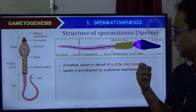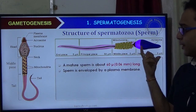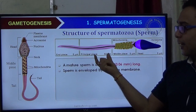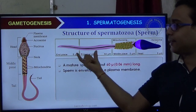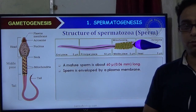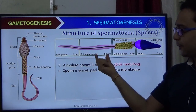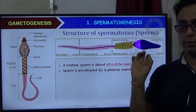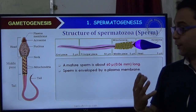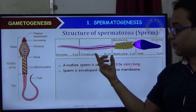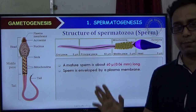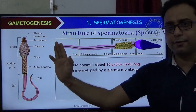If you look at the structure, you can differentiate different parts. You can see the head part and the middle piece. There is also the tail part, which includes the principal piece and the end piece.